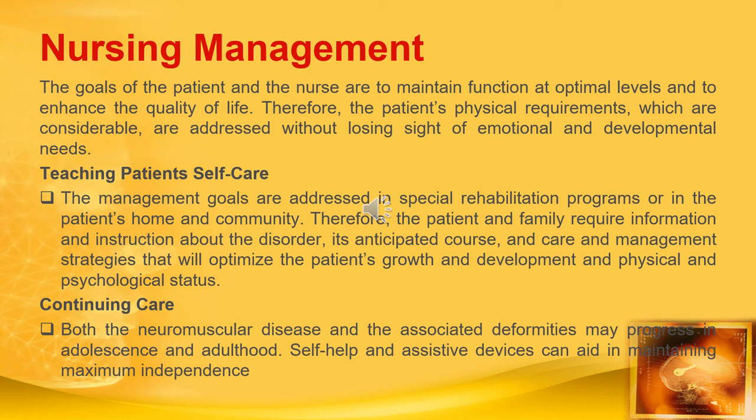The patient and family require information and instruction about the disorder, its anticipated course and care, and management strategies that will optimize the patient's growth and development and physical and psychological status. For continuing care, both the neuromuscular disease and the associated deformities progress in adolescence and adulthood. Self-help and assistive devices can aid in maintaining maximum independence.